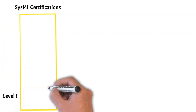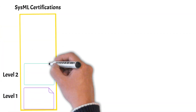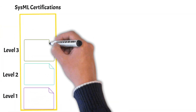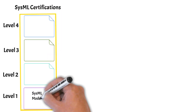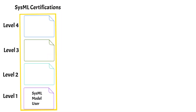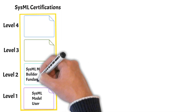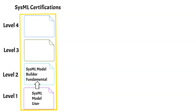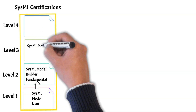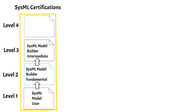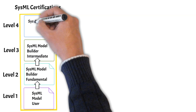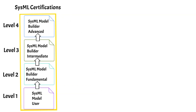We're going to focus on the four different levels of SysML certifications: the SysML Model User being level one, the SysML Model Builder Fundamental being level two, the SysML Model Builder Intermediate being level three, and the SysML Model Builder Advanced being level four.